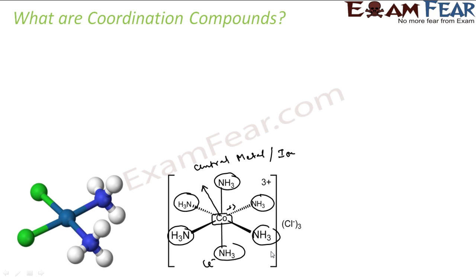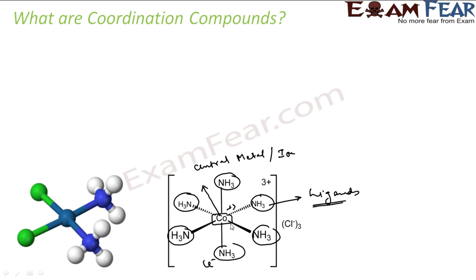Alfred Werner in 1893 was the first to formulate this idea and the structure of the Coordination Compound. The Central Metal Atom or ion is called the Coordination Centre. The surrounding array of molecules or ions are called Ligands. For example, Cobalt is the Central Atom or Coordination Centre in this case.